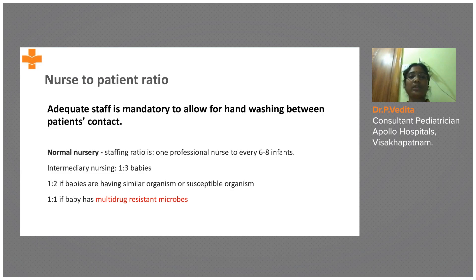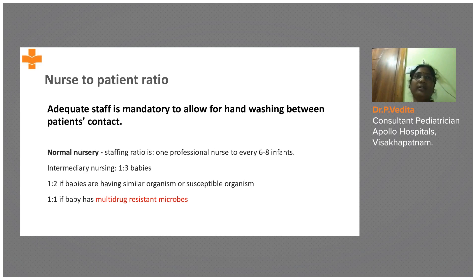Regarding nurse-to-patient ratio: adequate staffing is mandatory and a hand wash area must be available. In nurseries, one staff is assigned to at least six to eight infants. For high-risk but non-infected babies, the ratio is one to three. For multi-drug resistant organisms it should be one to one, or for similar-organism infections, one nurse to two babies.